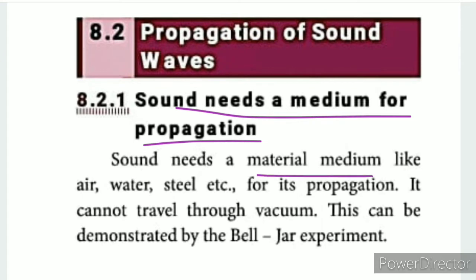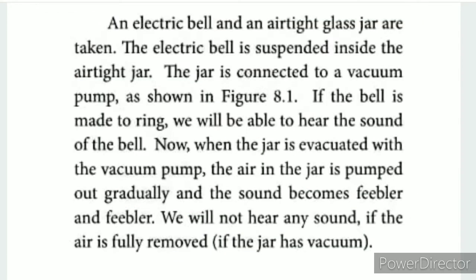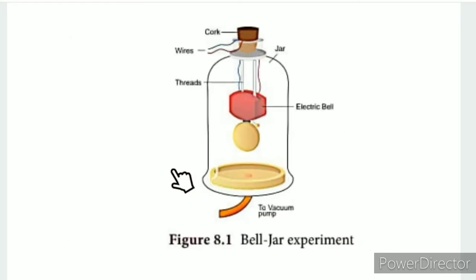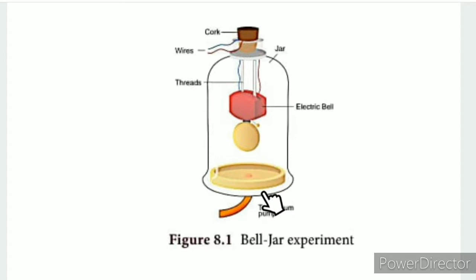Sound needs a medium for propagation. To demonstrate this, we use a cell phone or electric bell and a vacuum pump connection inside an airtight glass jar. First, with air present, the sound is clearly audible.